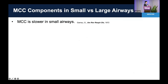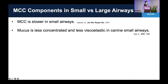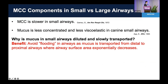Gathering other evidence, MCC seems to be slower in small airways. Other reports show mucus is less concentrated and less viscoelastic in canine small airways compared to large airways. But the question is: why might mucus in small airways be diluted and slowly transported?